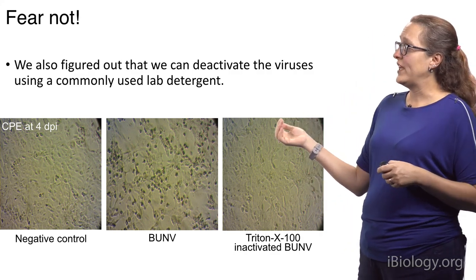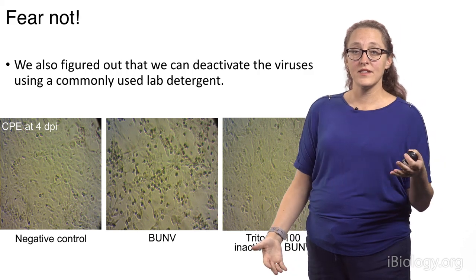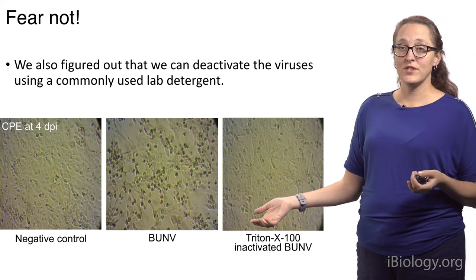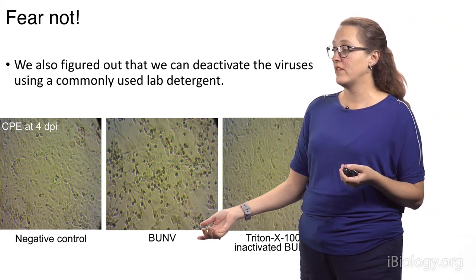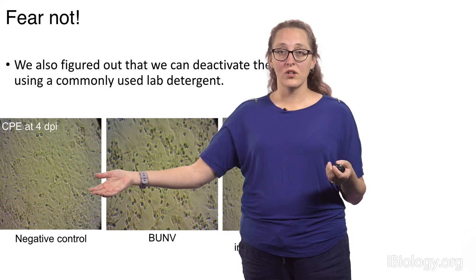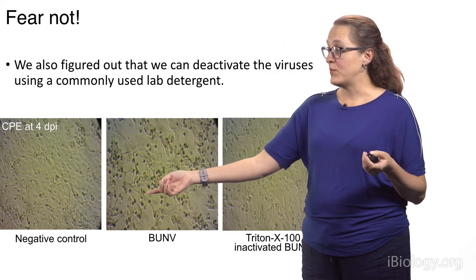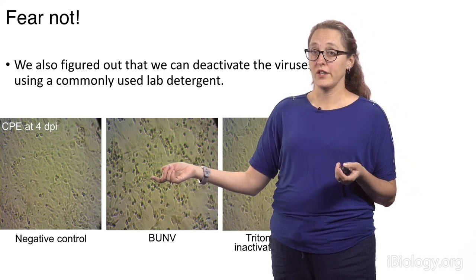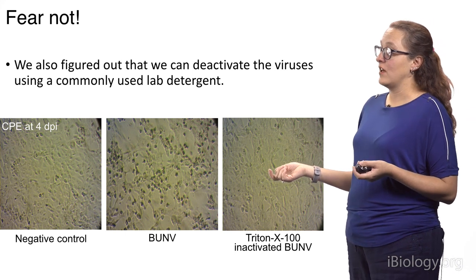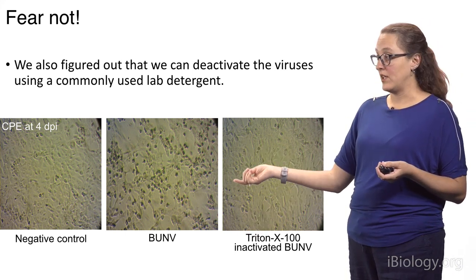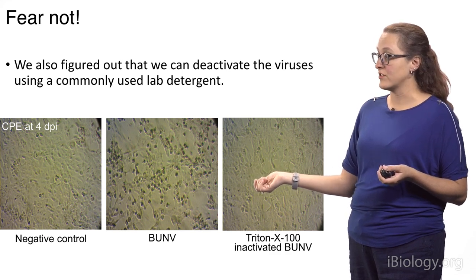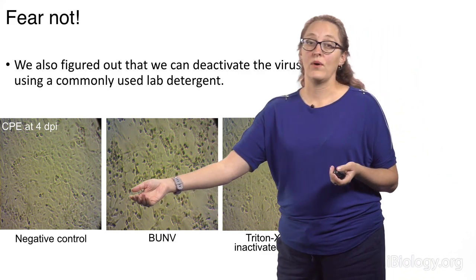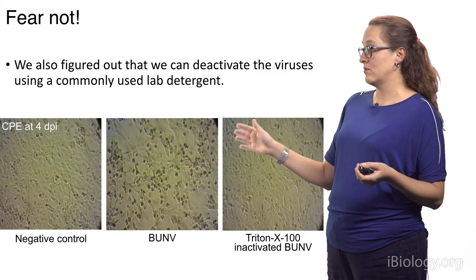We also figured out how to kill it. We took a commonly used detergent called Triton X-100 and saw that it inactivated all three viruses. This is a representative — Bunyamwera at four days post-infection shows divots and damage to the cell monolayer. But if you look at the inactivation after one-hour incubation with the detergent, four days post-inoculation it looks more like the negative control with no virus than the infectious treatment. So we've shown we can inactivate the virus — even if it's environmentally stable, we know how to kill it.